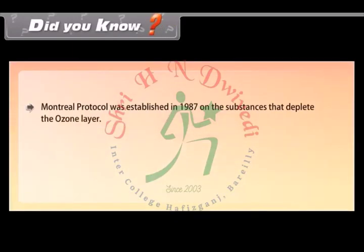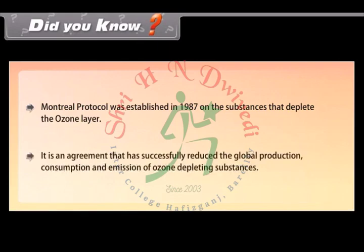The Montreal Protocol was established in 1987 on the substances that deplete the ozone layer. It is an international agreement that has successfully reduced the global production, consumption, and emission of ozone-depleting substances.